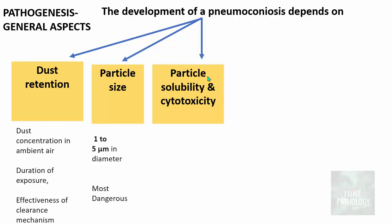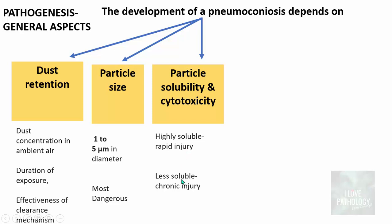The third factor is solubility and cytotoxicity of the particle. If the particle is highly soluble, the cytotoxic effect will be very rapid, resulting in rapidly developing lung injury. If the particle is less soluble, clearing is delayed and that may elicit a chronic inflammatory reaction leading to fibrosis. So highly soluble particles cause rapid lung injury; less soluble particles cause chronic lung injury.